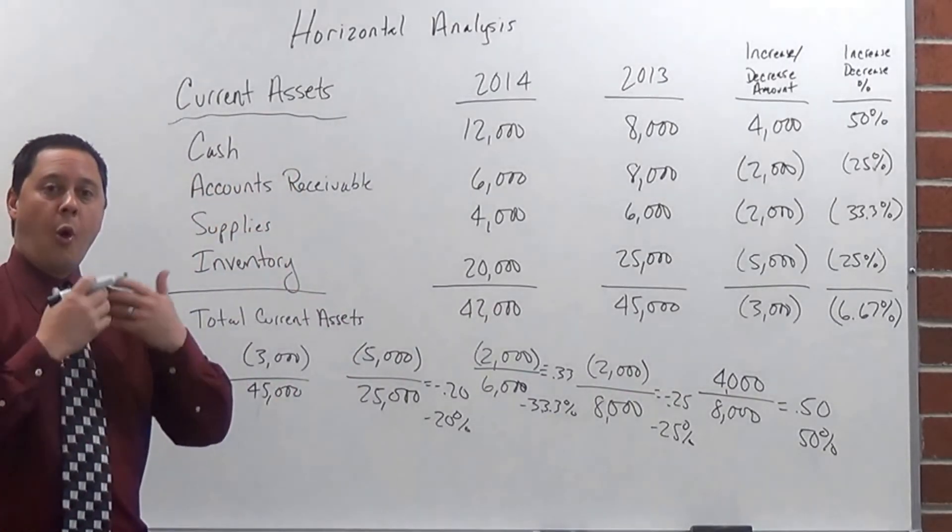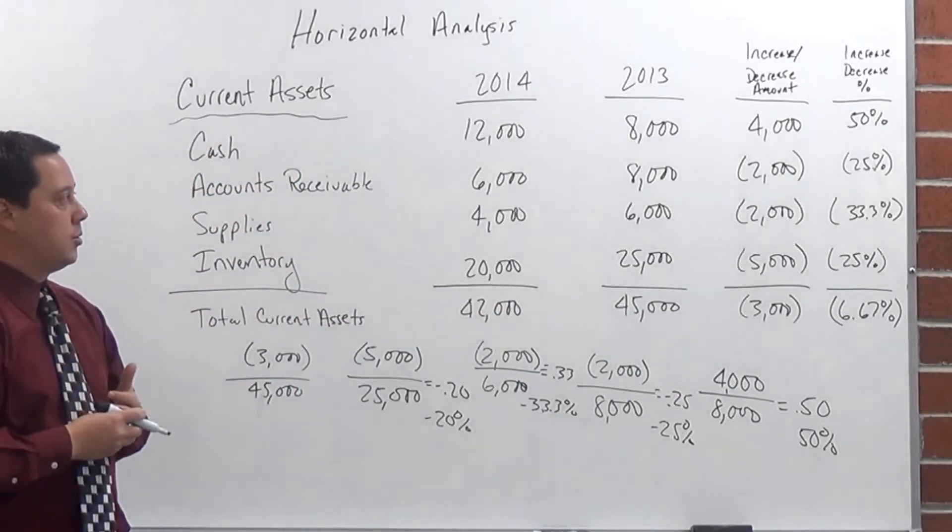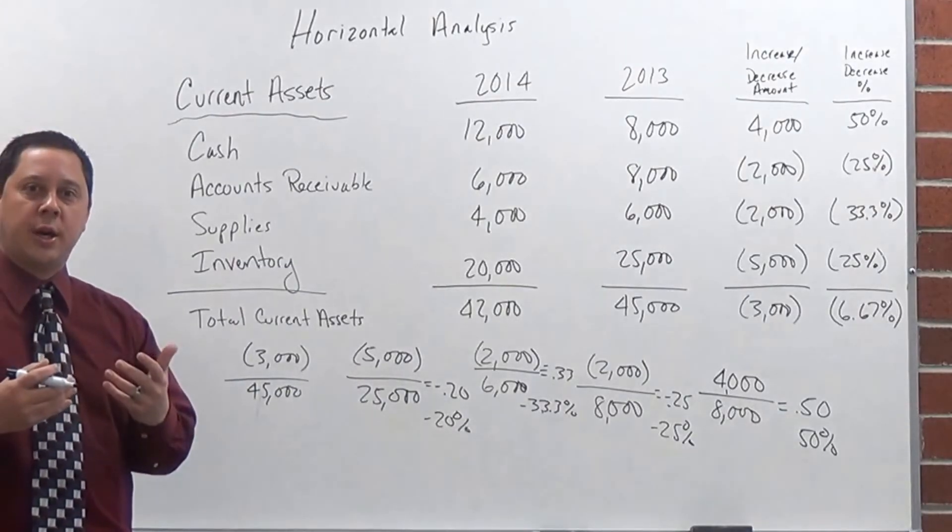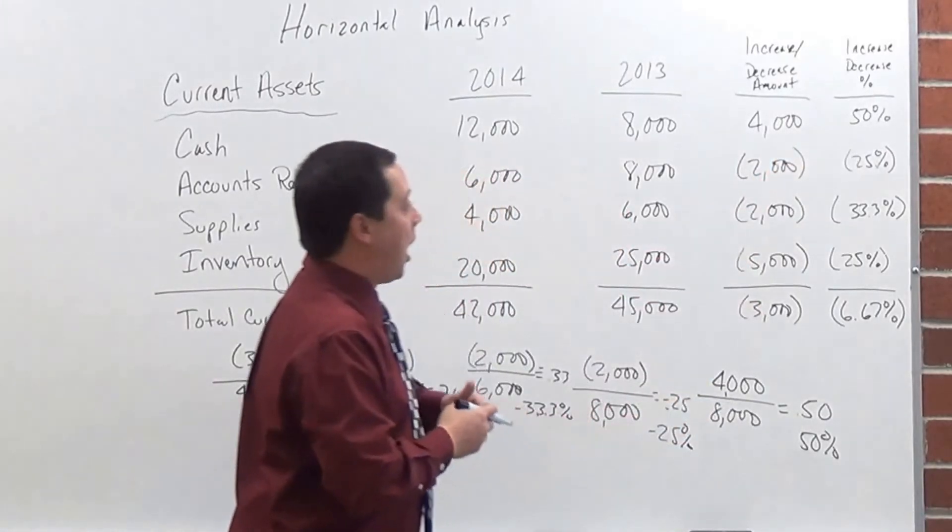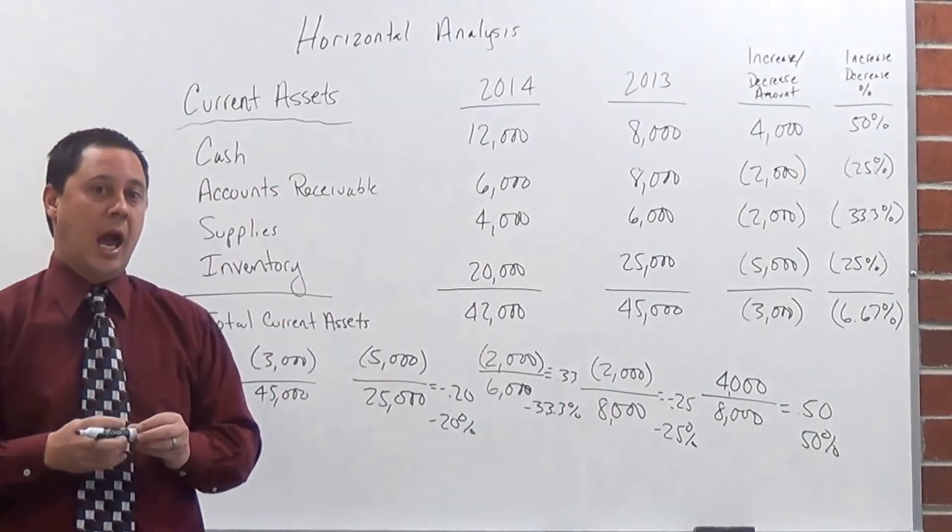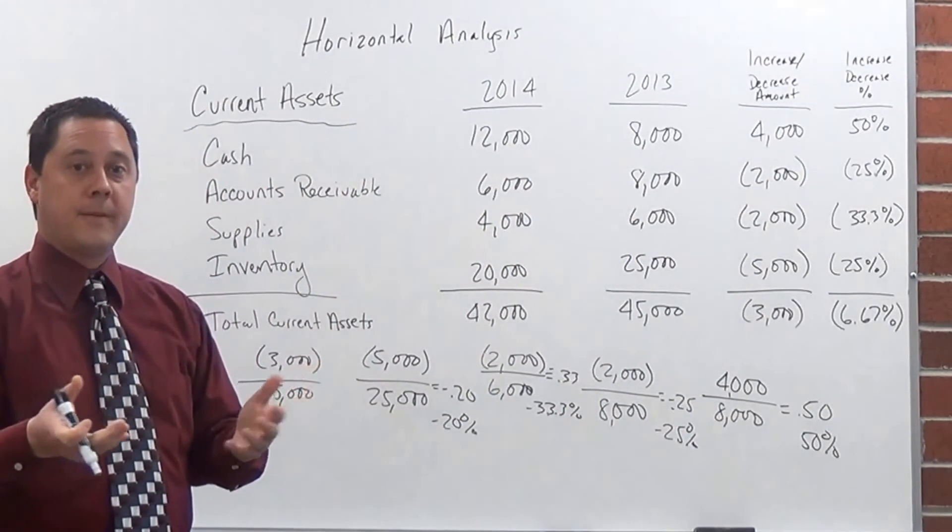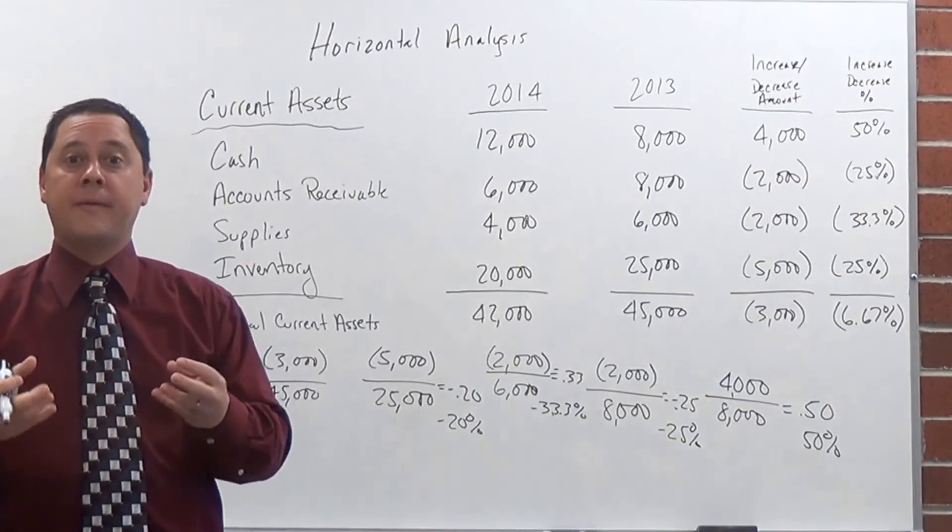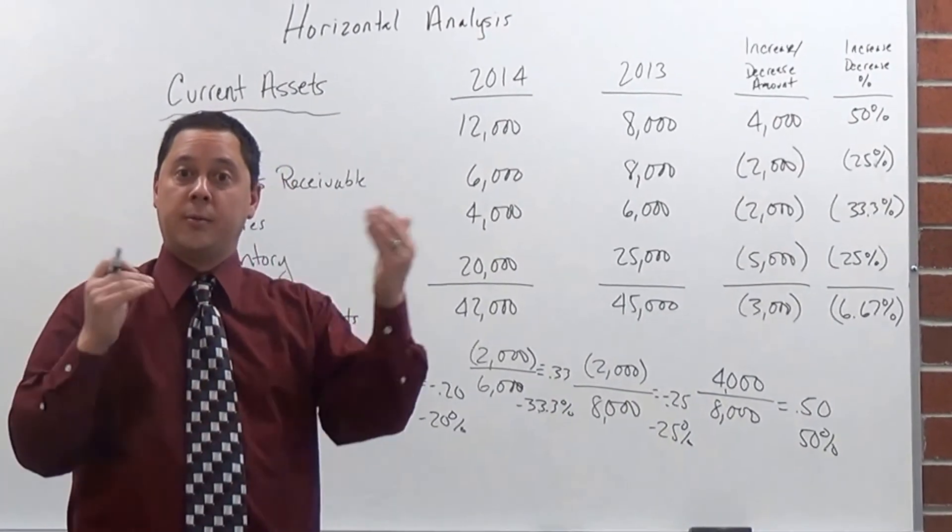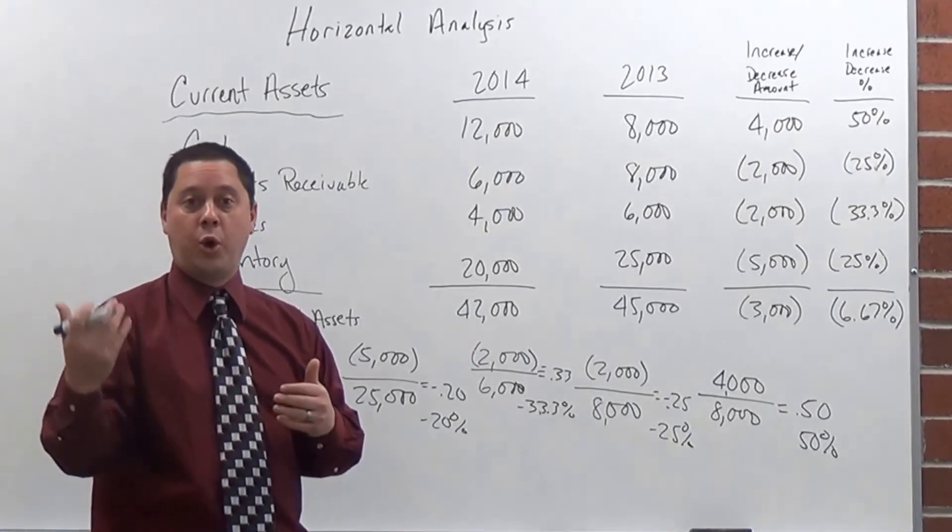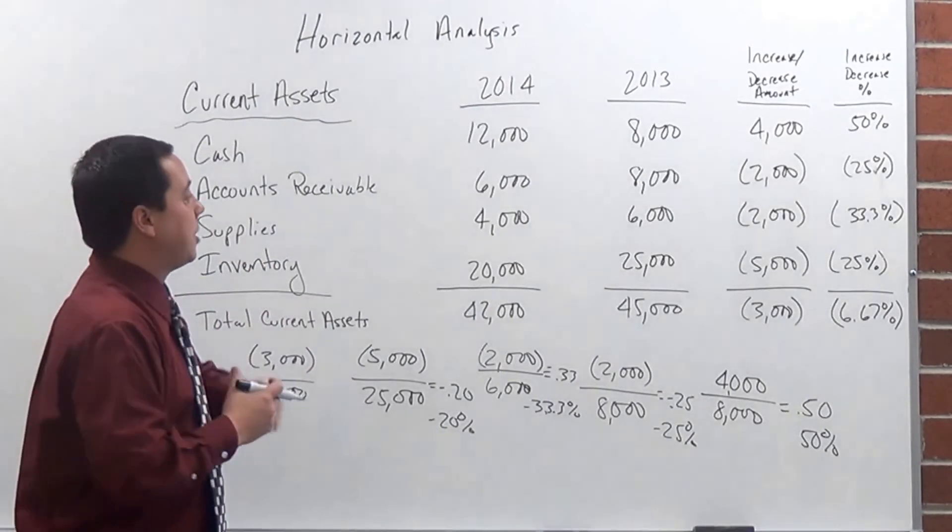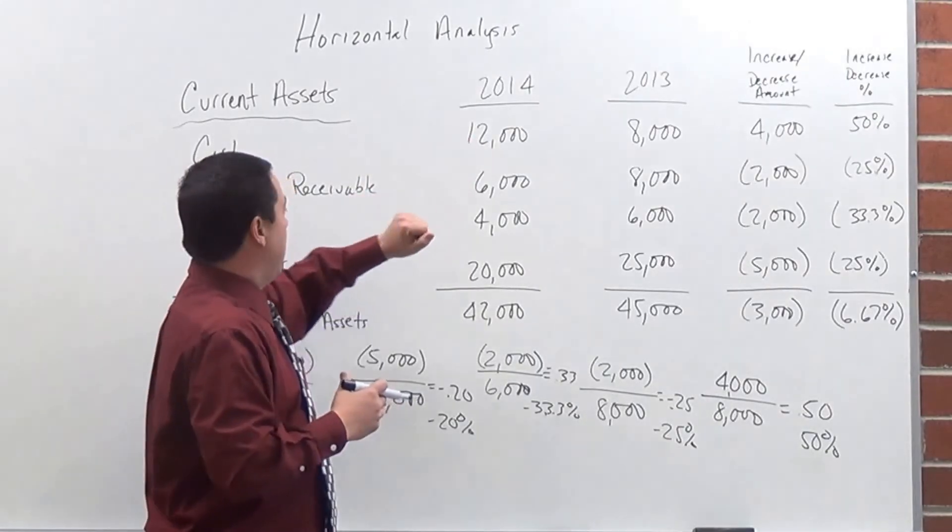Now, let me go over some of the things of why companies will use this. Well, we want to see some of the changes here, and what we do is then figure out what are the reasons for these changes. Obviously, we had a 50% increase in cash. Now, why did we have that 50% increase in cash? That will be found in your Statement of Cash Flows. What were those things that made those changes, which could be the financing, investing, or your operations.